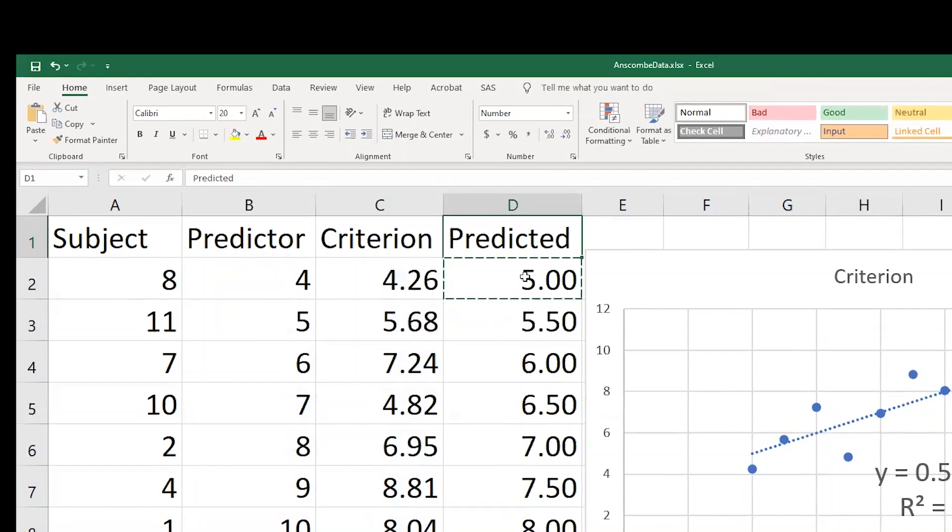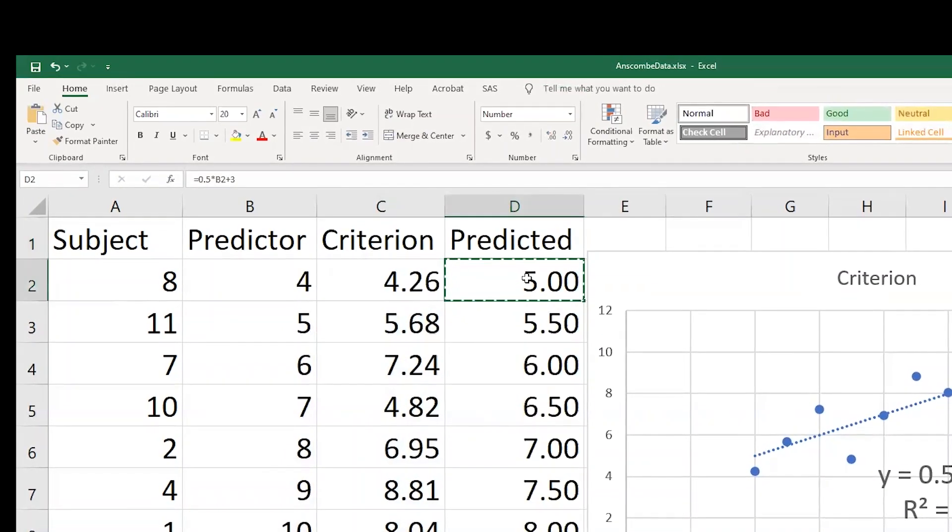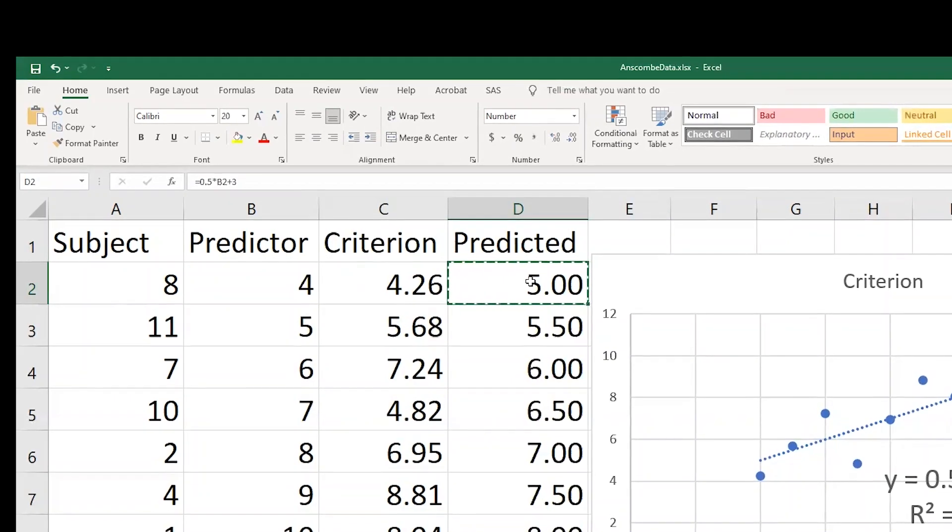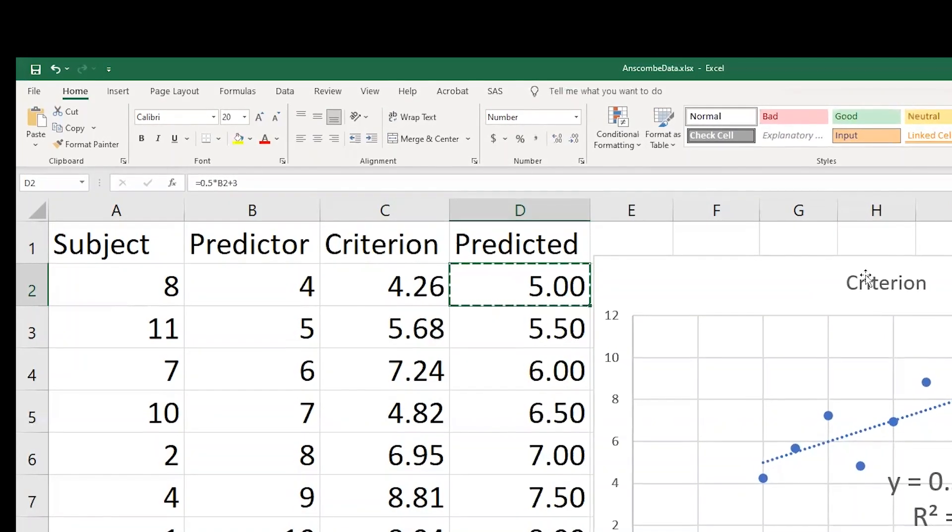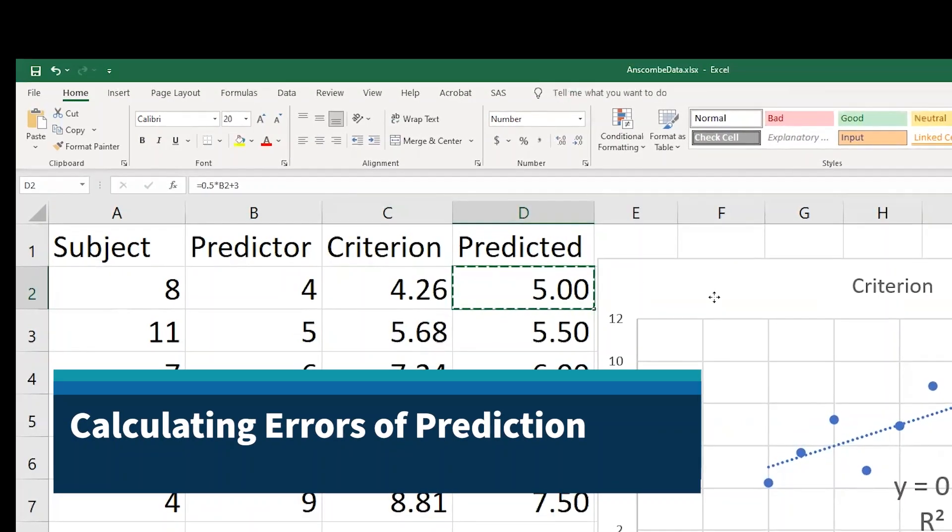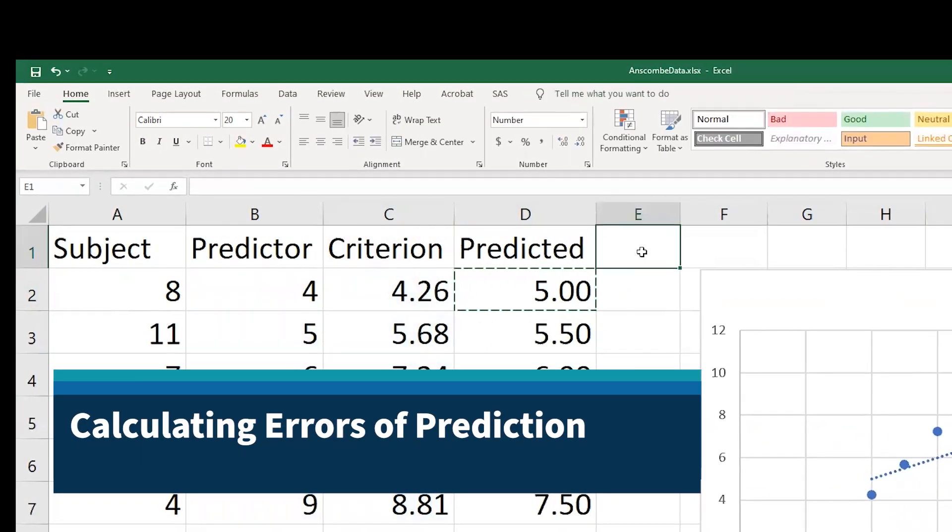Now, these predicted values are not equal to the criterion, as we just talked about. So I might be interested in calculating the errors of prediction. Let's make a new variable and call this error.